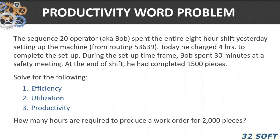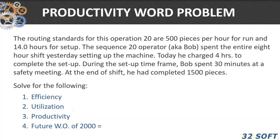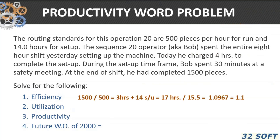Here is a simple productivity calculation. Operator 20 spent 8 hours yesterday setting up a machine, then charged 4 hours to complete the setup today. During that same setup timeframe, he spent 30 minutes at a safety meeting. At the end, he completed 1,500 pieces. The question is: how many hours are required to produce an order for 2,000 pieces?